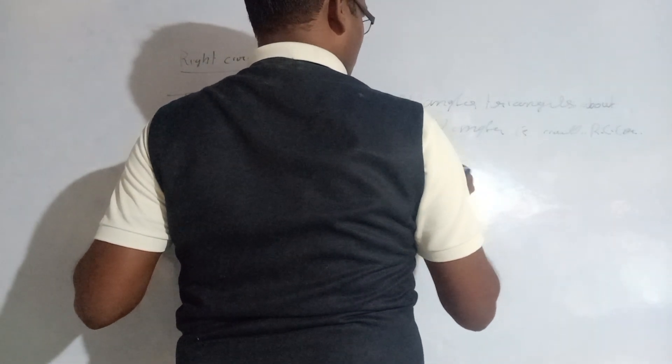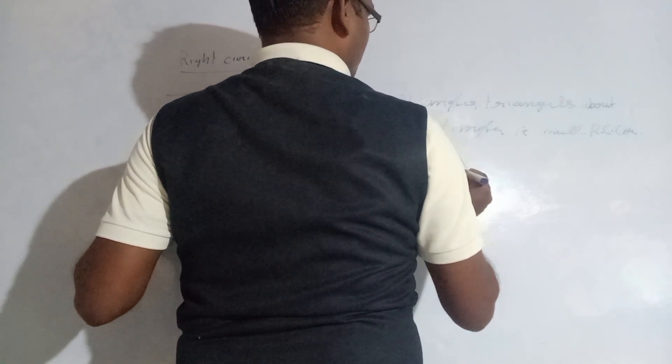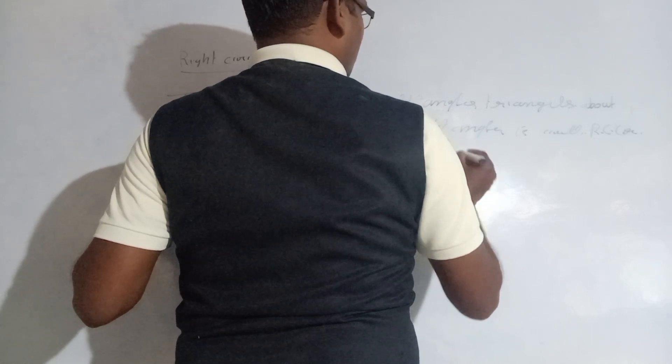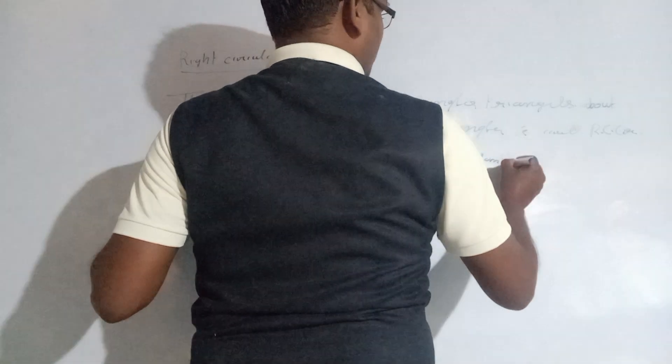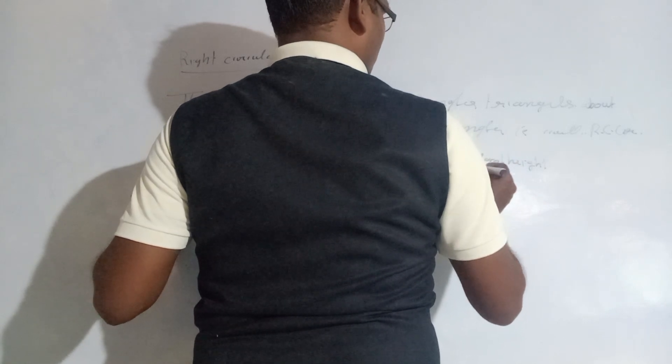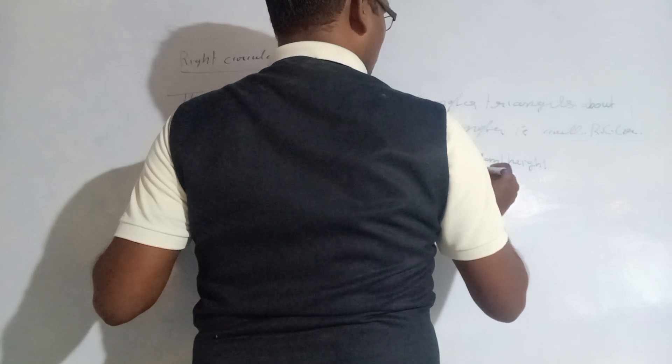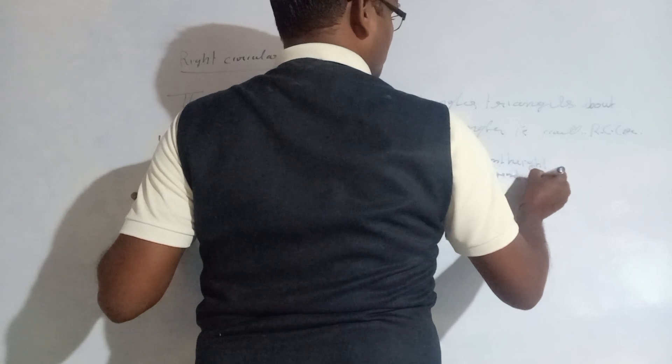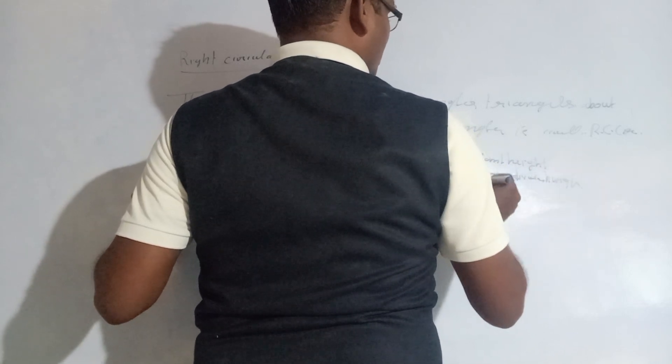Suppose this is the right circular cone we have drawn here. This is the structure of the cone. If we see, this will be the slant height. This is the perpendicular height or right angle height. This is the radius.